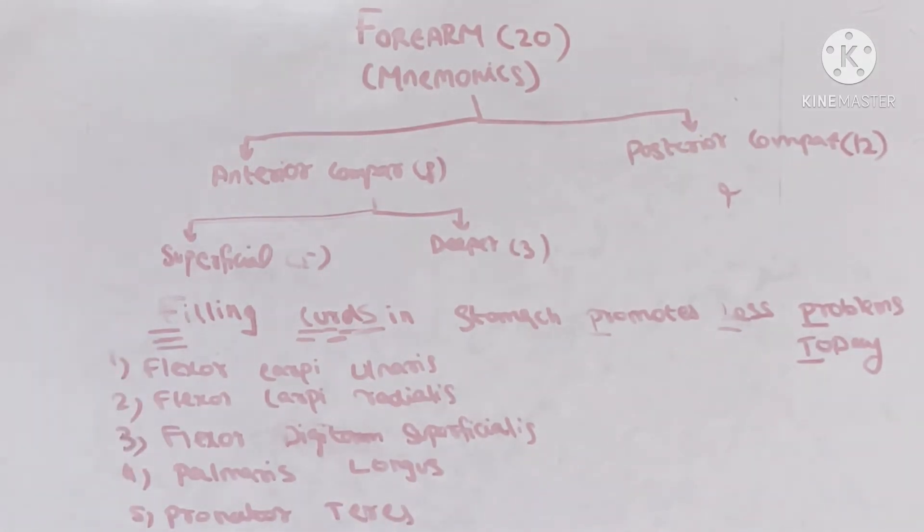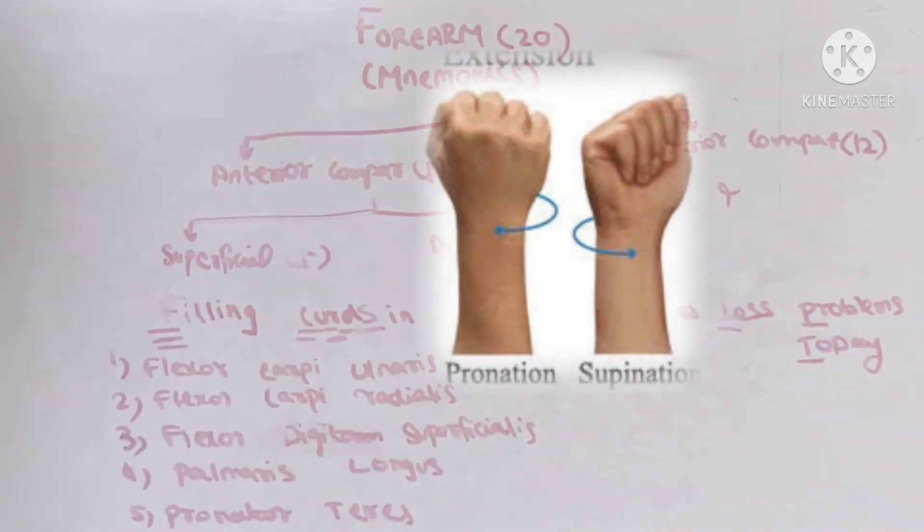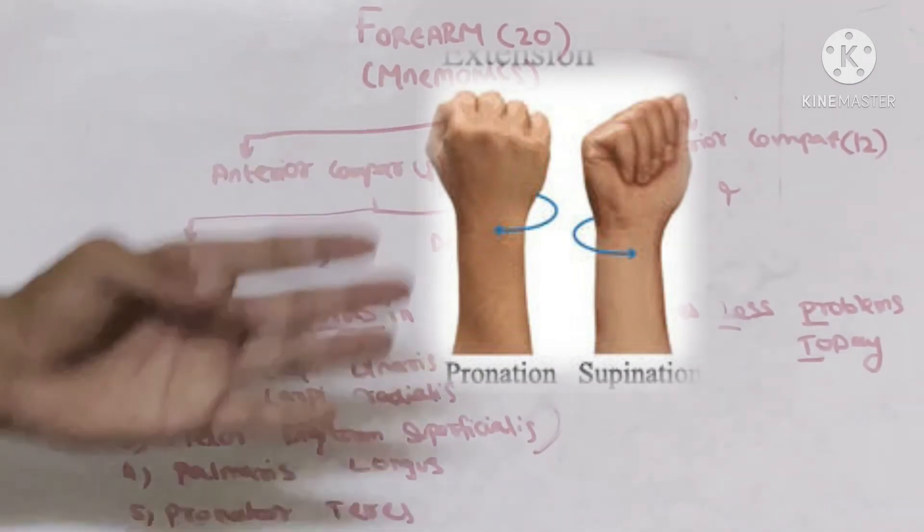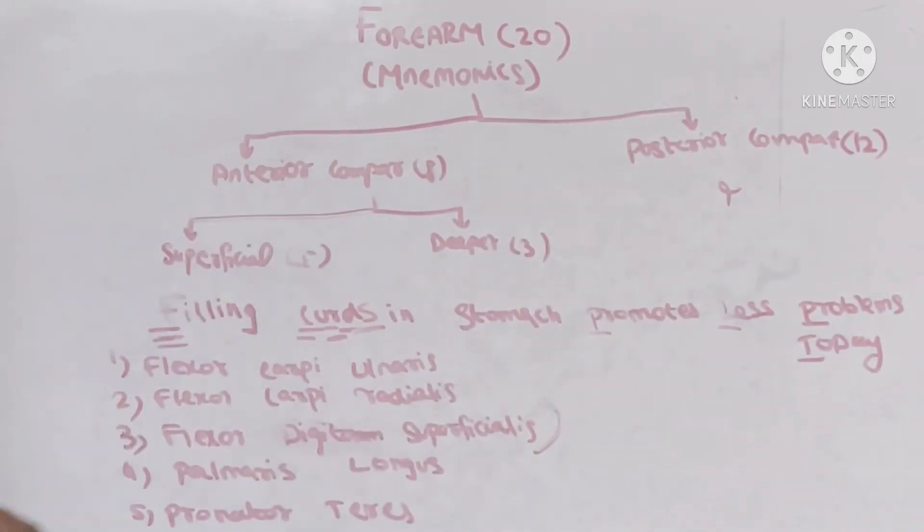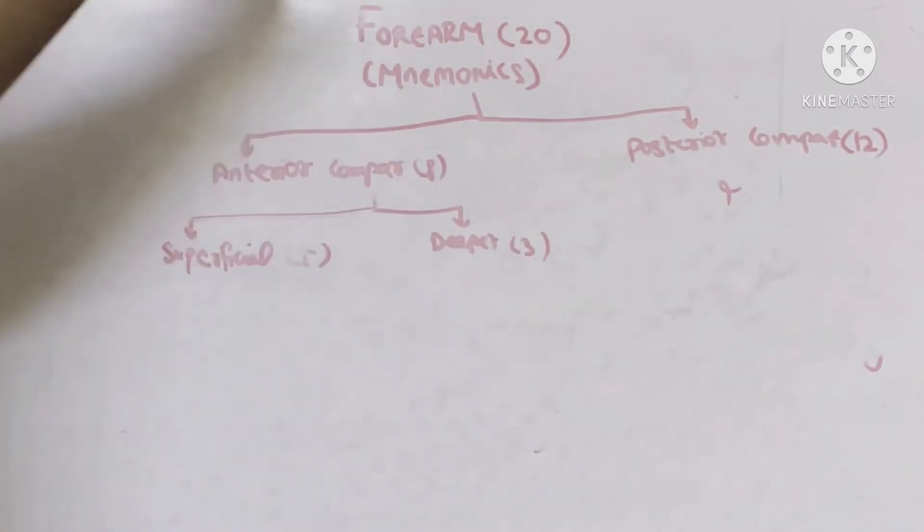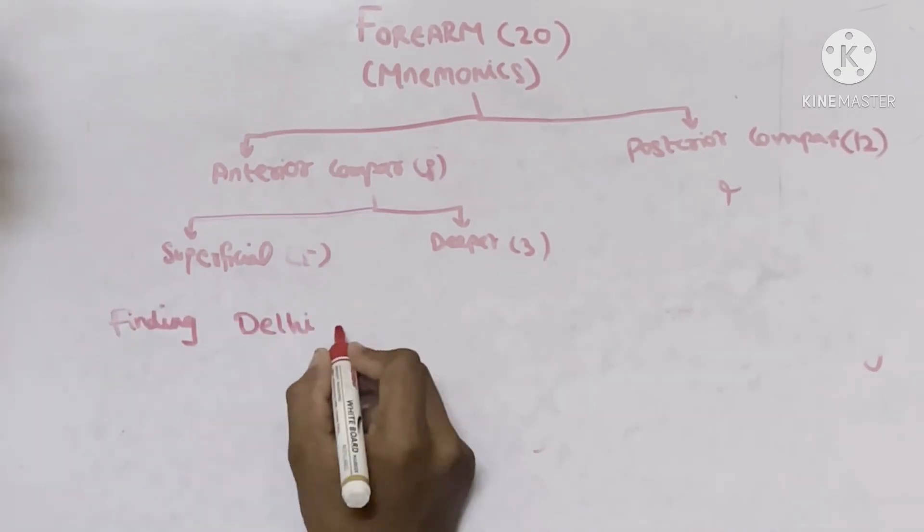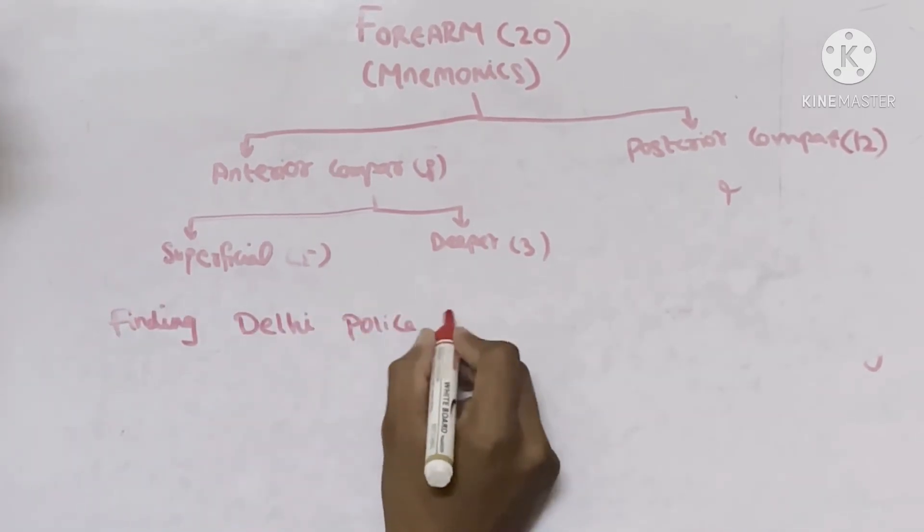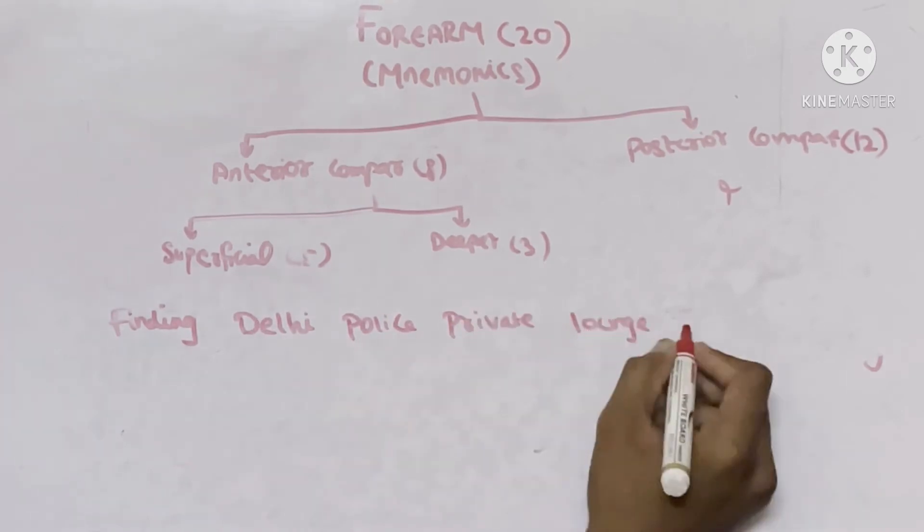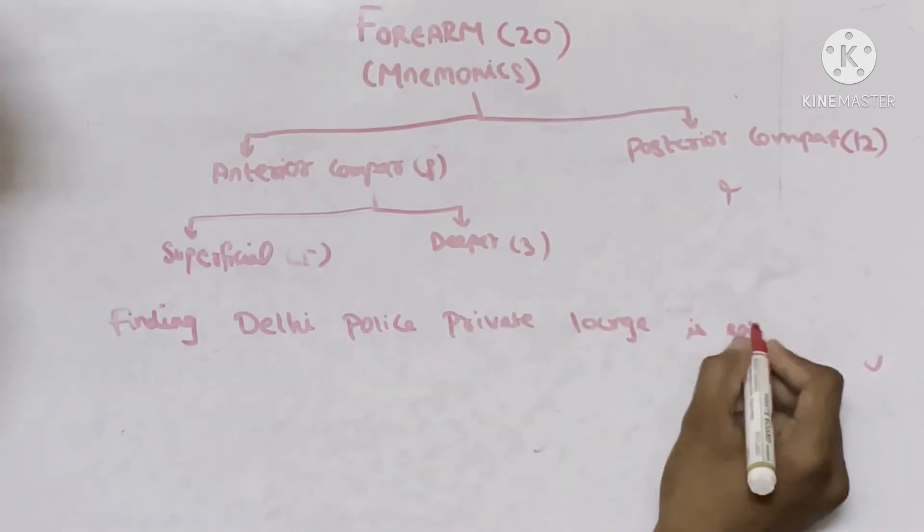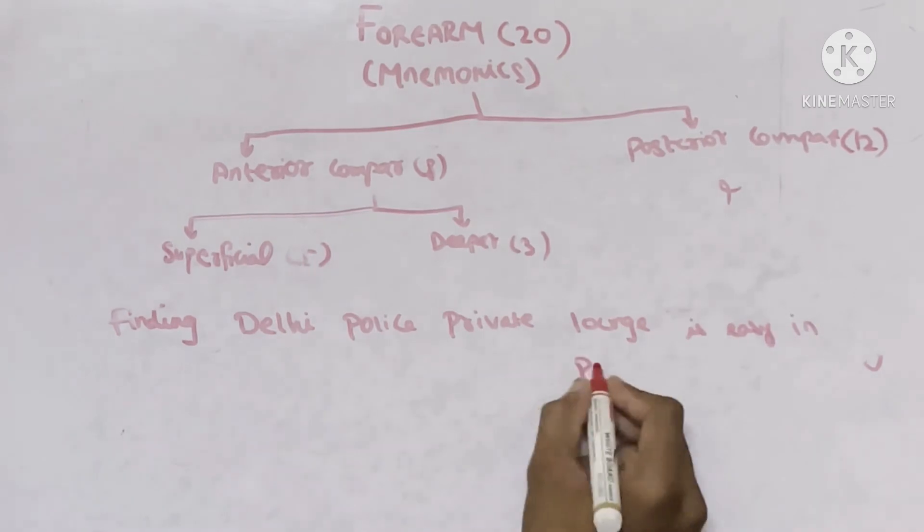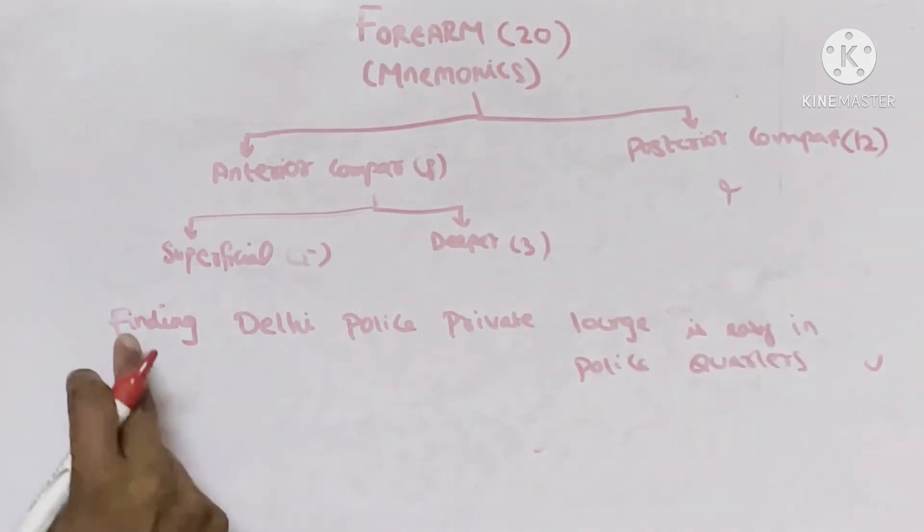Here's a simple additional statement: pronator helps in the process of pronation. So this is a simple statement for remembering superficial muscle. Now let's move to deeper muscles. For the three deeper muscles, just remember one single statement called: finding Delhi polis private long is easy in polis quartus.